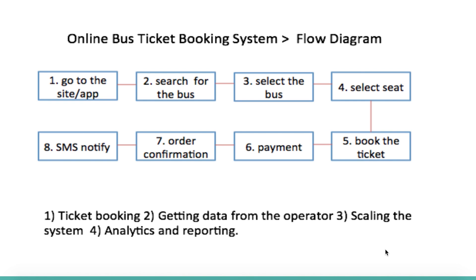Let's understand how this flow works. You go into a system like redbus.in or ticketgoose.com — you can use the site or an app. You search for a bus by giving the destination and starting location, then you select a bus from the inventory based on price or recommendations. Then you select a seat and book the ticket, providing details like where you want to board and alight.